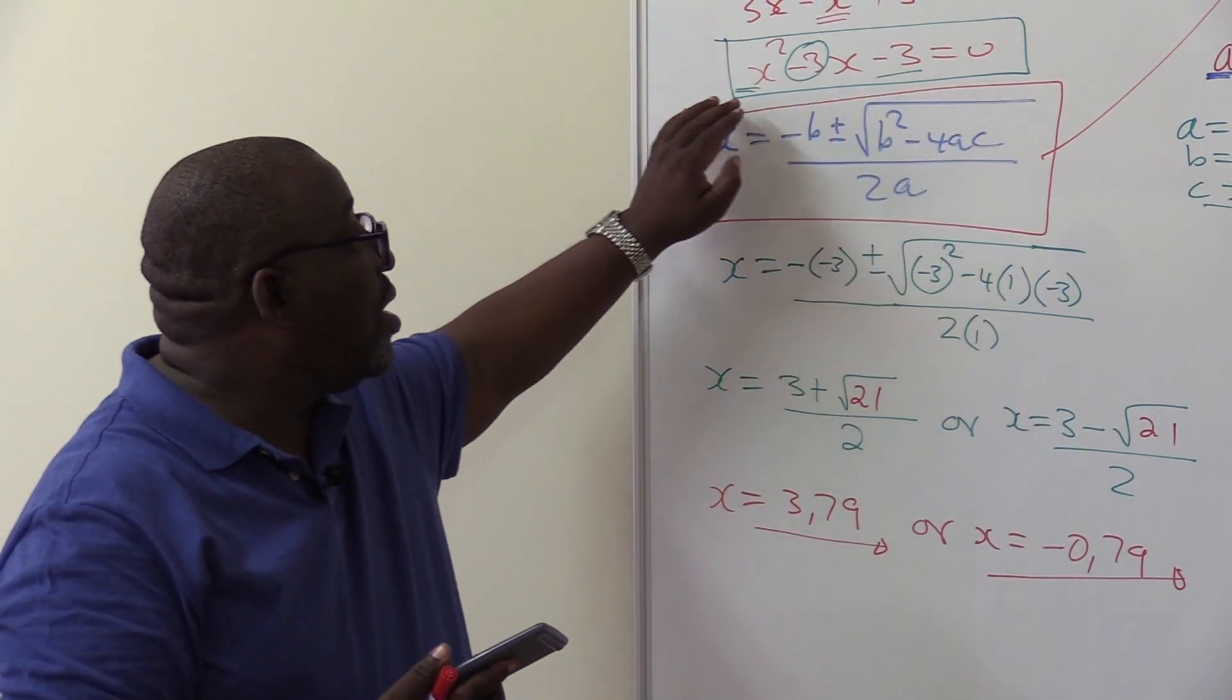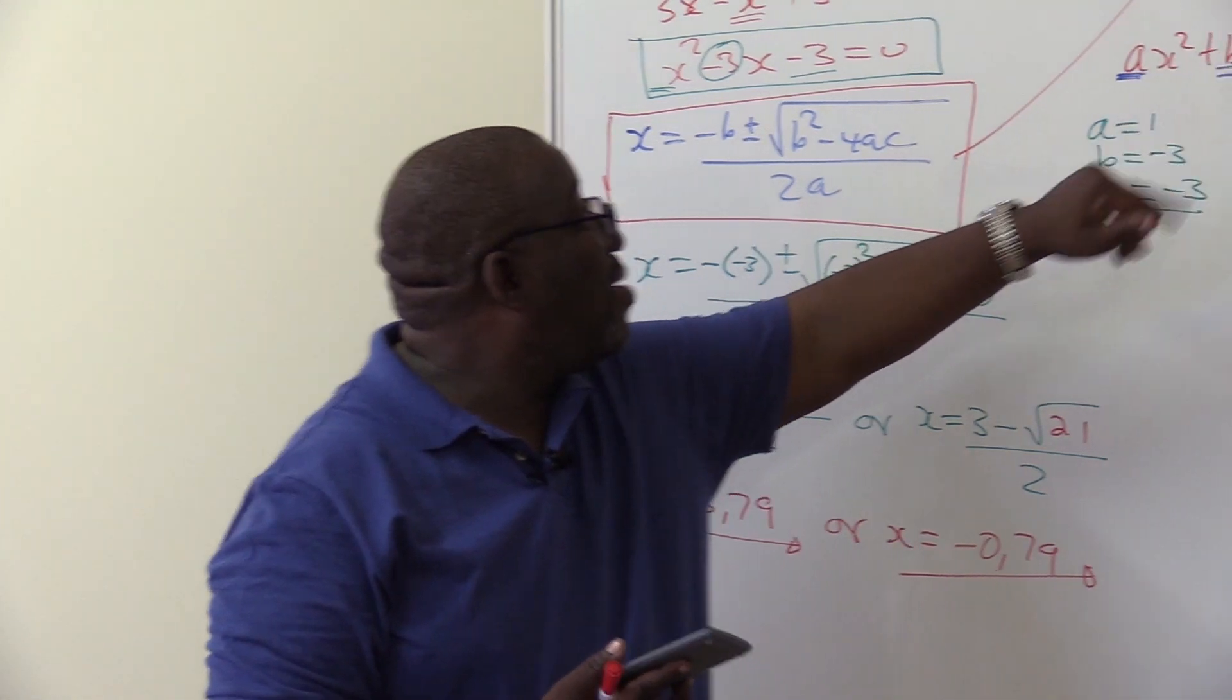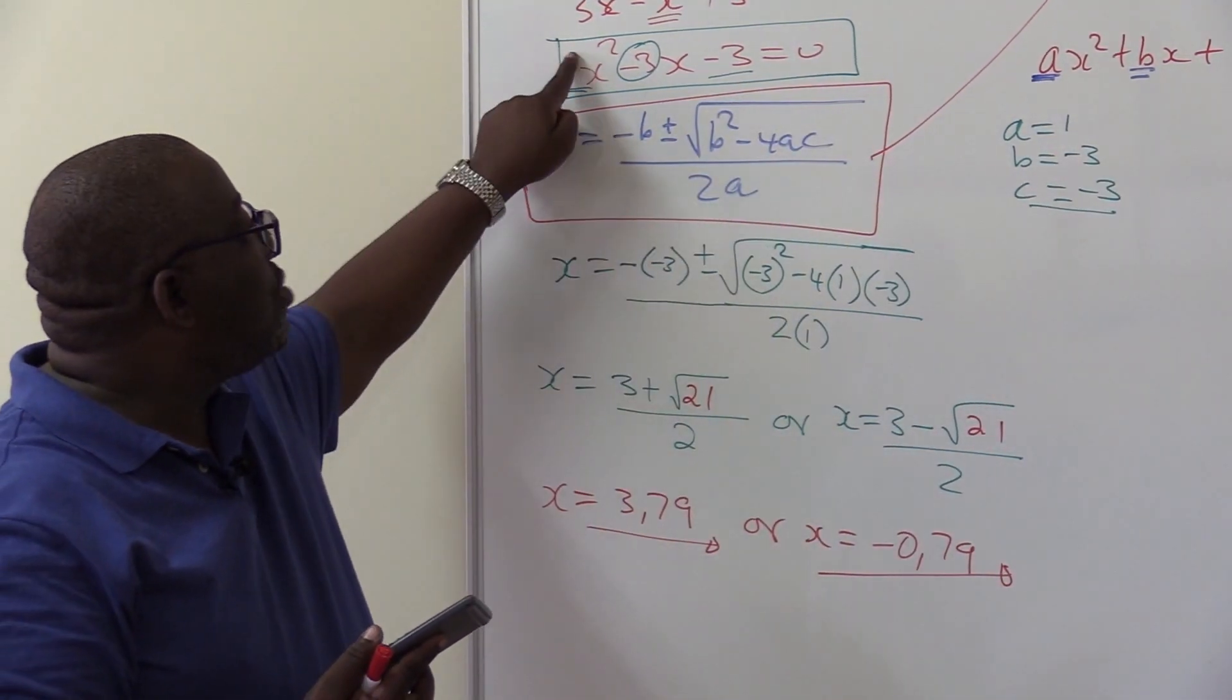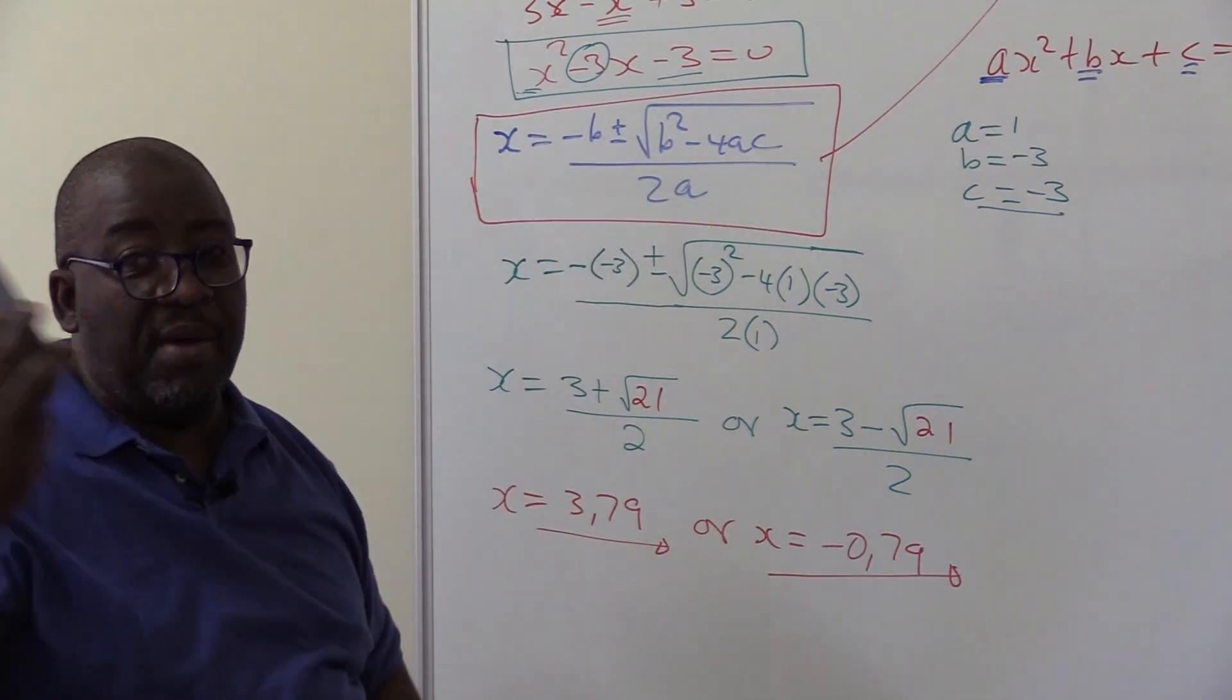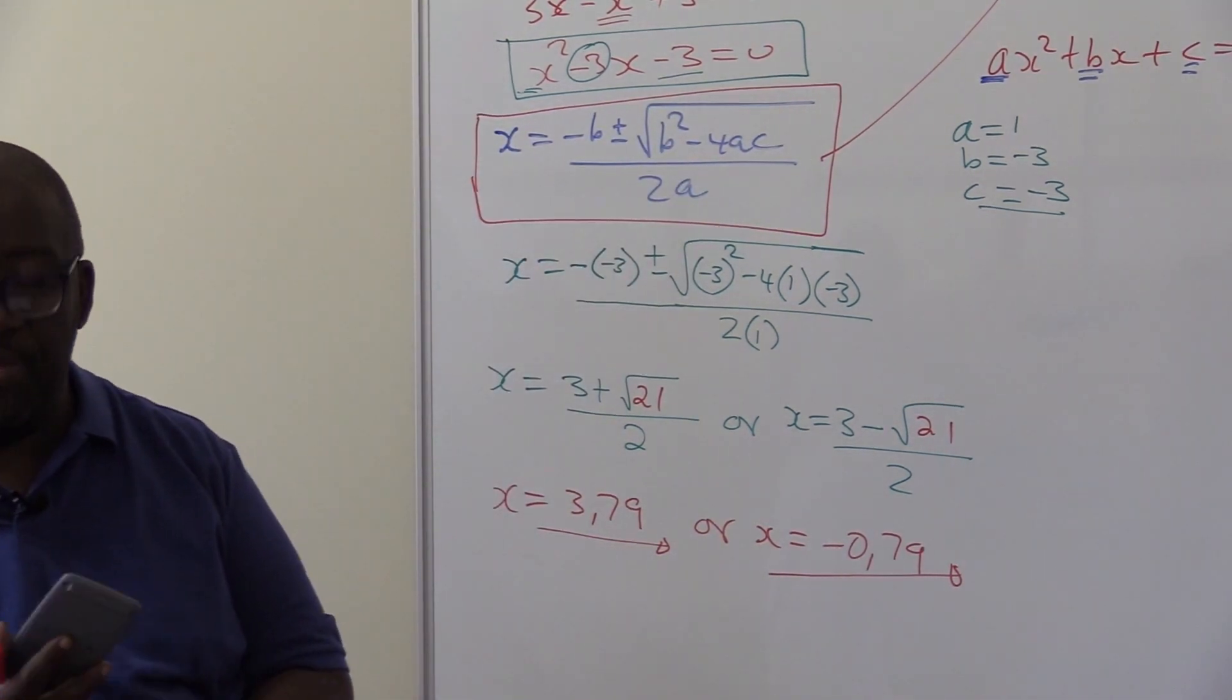You put it in a standard form in the form of ax squared plus bx plus c equal to zero first. Then you can see this one is called a, this one is called b, and that one is called c. When you substitute, it becomes your calculator work. Thank you.